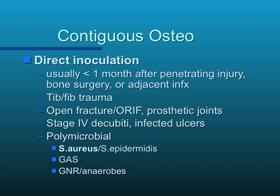Other sites include decubiti. We see a lot of stage 4 decubitus ulcers in our spinal cord injury unit. These are polymicrobial in nature — lots of Staph aureus, but also Group A Strep, gram negatives, anaerobes, Staphylococcus epidermidis, and other coagulase-negative Staphs.